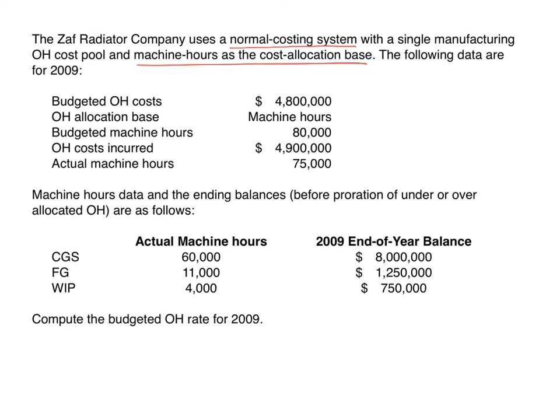The following data are for 2009. We're given both budgeted and actual information, which is going to be helpful. We have machine hours data and the ending balances for cost of goods sold, finished goods, and work in process.